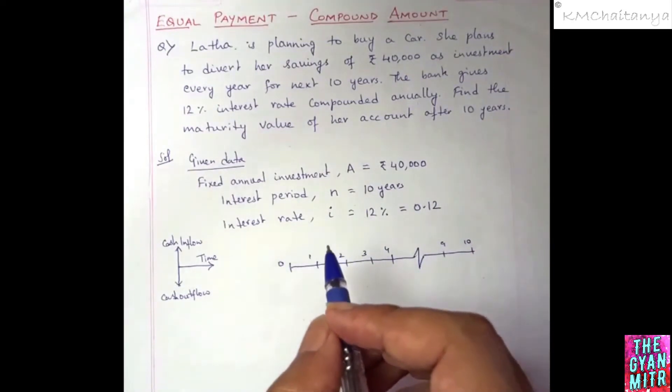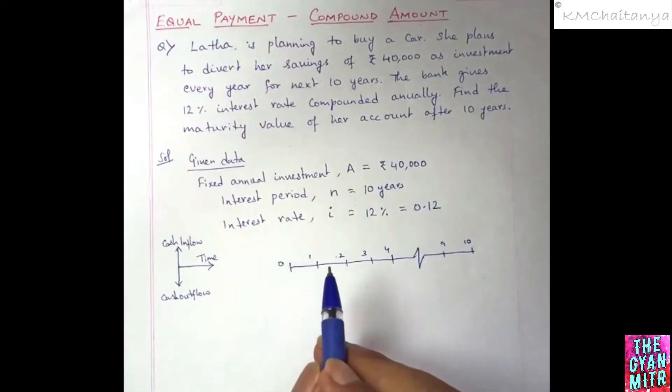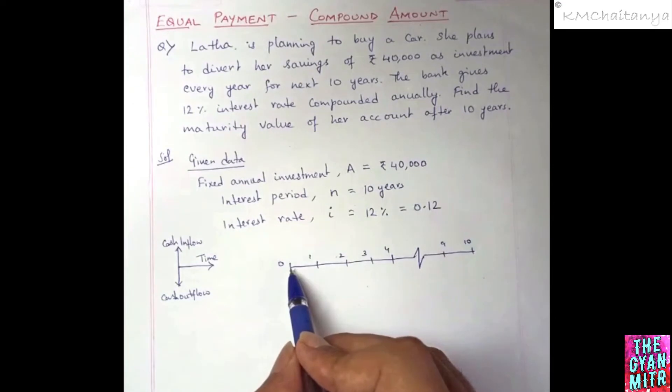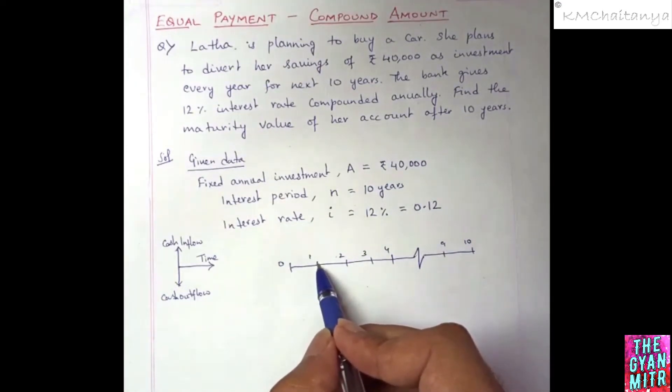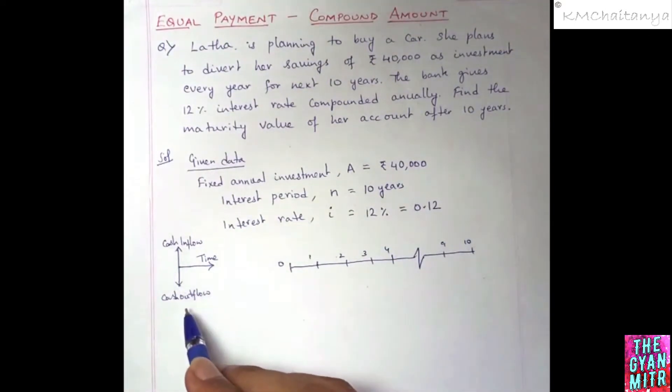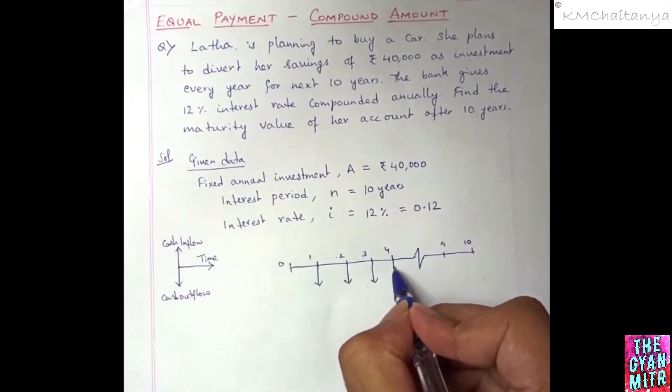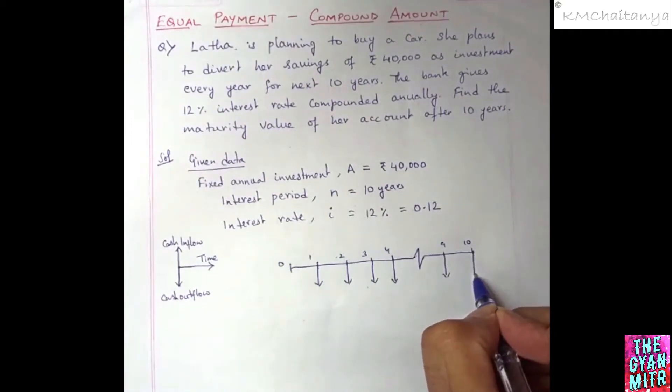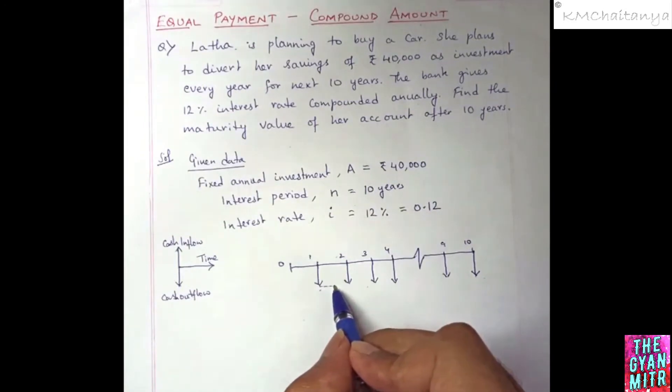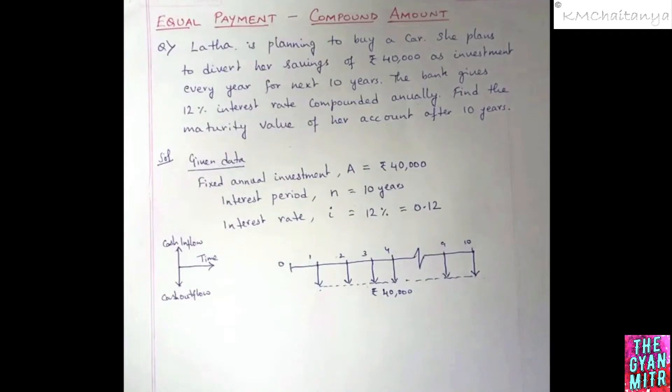So what is happening now? The payment is not from time t equal to 0. She will be investing after one year. So you need to remember in equal payment, the equal payment or the annuity starts from the end of first year. Latha is planning to divert her savings. Since she is diverting her savings, the money is going from her account to the bank account, therefore it is a cash outflow. So she is diverting a constant sum of 40,000 rupees, which is constant every year up to 10 years. So even at the end of 10th year she is going to invest. So this is Rs 40,000.